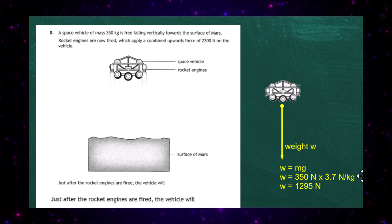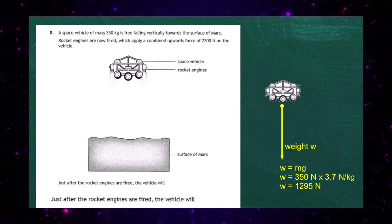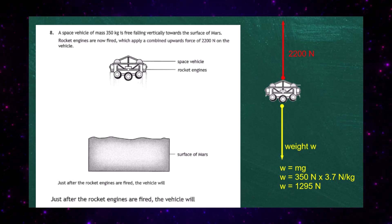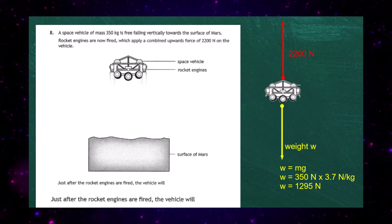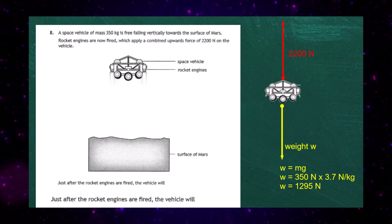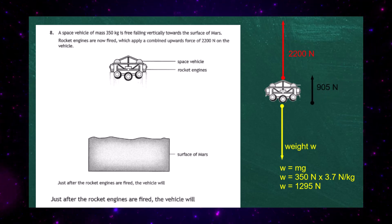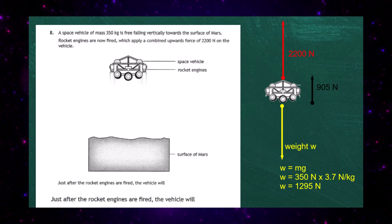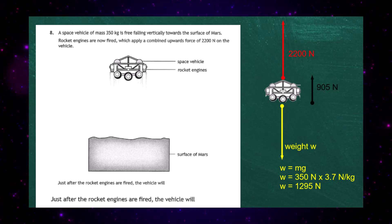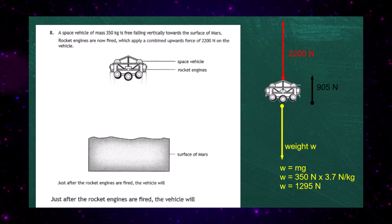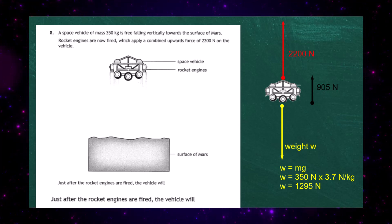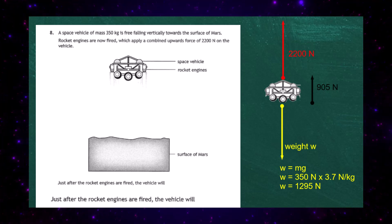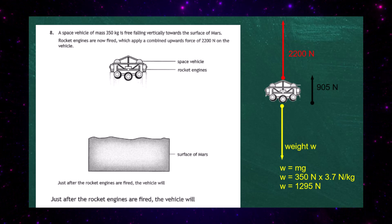The thrust from the rocket engines gives an upward force of 2200 Newtons. There's clearly an unbalanced force: 2200 − 1295 = 905 Newtons acting upward. This upward acceleration acts in the opposite direction to the vehicle's motion — it's free-falling downward — so the acceleration will cause the spacecraft to reduce its speed as it approaches the surface of Mars.